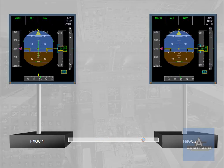The master FMGC is automatically determined by the engagement status of the Autopilot Flight Director. If Autopilot 1 is on, FMGC 1 is master. If Autopilot 2 is on, FMGC 2 is master. If Autopilot 1 plus 2, and/or Flight Director 1 plus 2 are on, FMGC 1 is master.